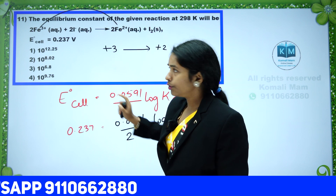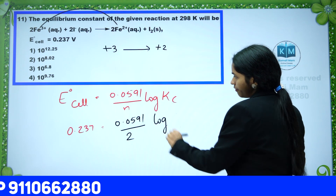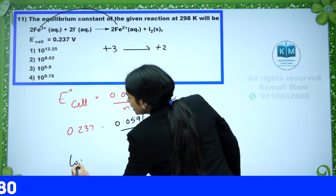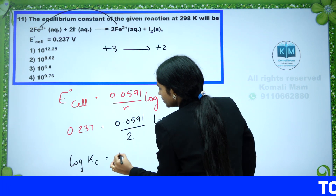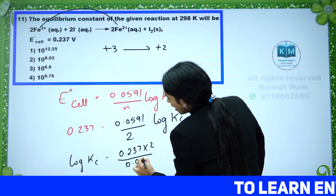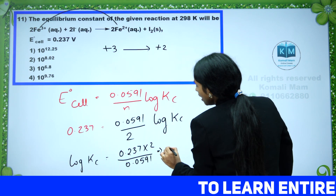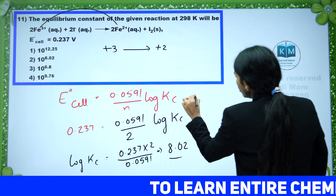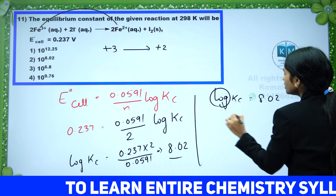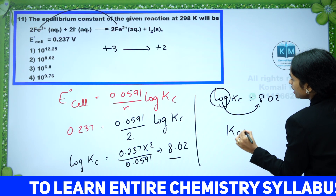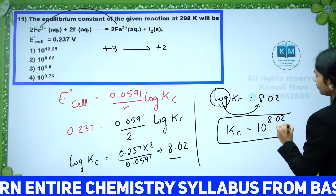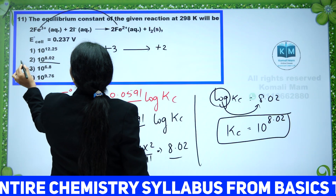We need to calculate KC. Keep log KC on one side and move the entire term to the other side: 0.237 × 2 / 0.0591. Solving this, we get approximately 8.02. So log KC = 8.02. Moving log to the other side, it becomes antilog — so KC = 10^8.02.